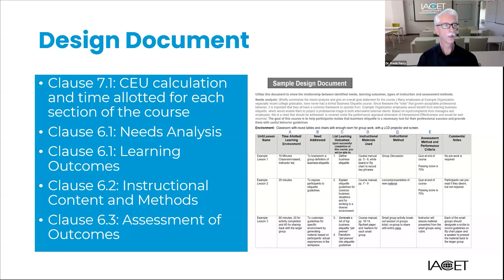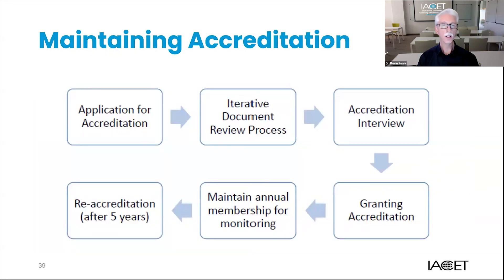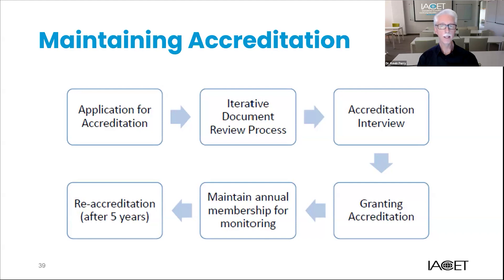Once you have successfully become IACET accredited, you will want to maintain your accreditation. Each year, you will conduct an organizational audit or internal review to ensure you remain compliant with the current standard and include the results in an online annual report that you submit to IACET. In addition, that annual report involves reporting statistics to IACET, such as the number of learners you serve, the number of CEUs you award, and any other continuous improvement and innovation steps that you've taken. This annual report will occur for years two, three, and four, and when you submit your report on your accreditation anniversary date, you include payment for your annual maintenance fee of $1,095. Accredited providers are required to keep their processes, policies, and other documentation current, particularly as updates to the standard occur, which occurs every five years.